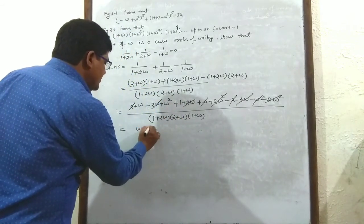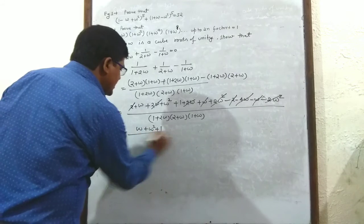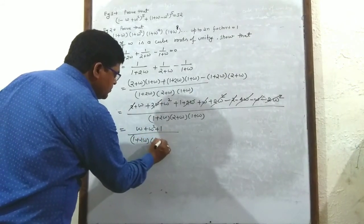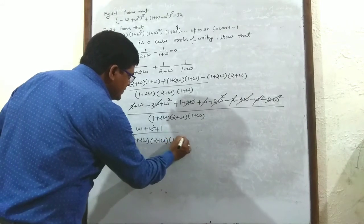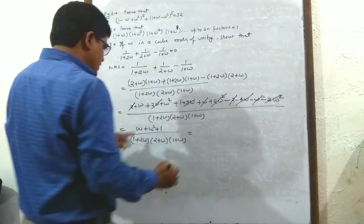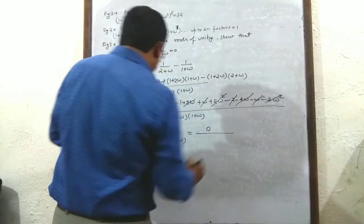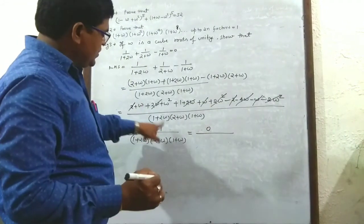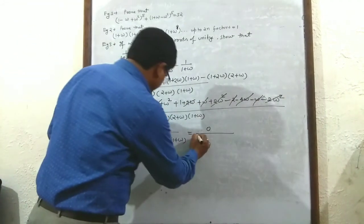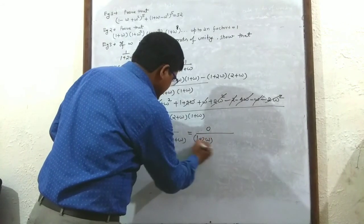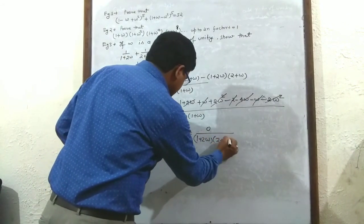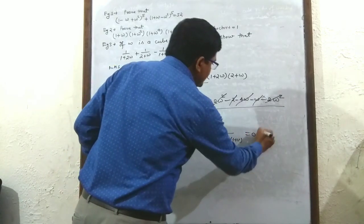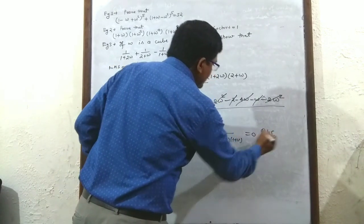The numerator becomes ω + ω² + 1 over (1 + 2ω)(2 + ω)(1 + ω). Since 1 + ω + ω² = 0, this equals 0 / [(1 + 2ω)(2 + ω)(1 + ω)] = 0 = right hand side. Hence proved.